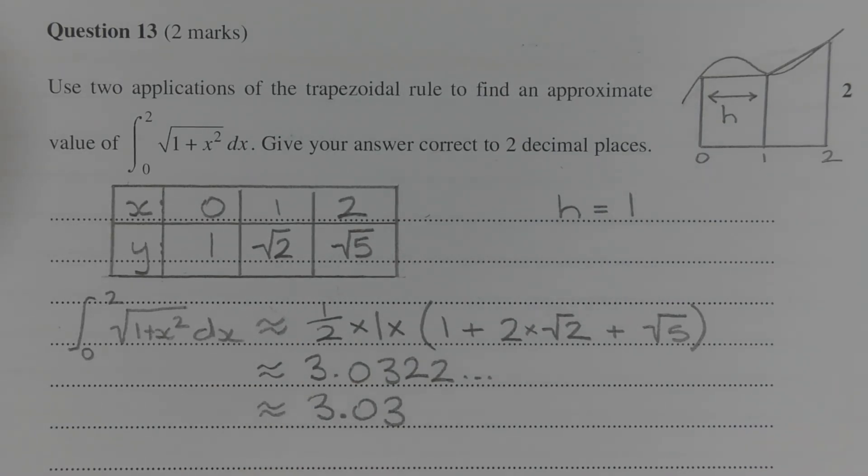Applying two applications of the trapezoidal rule, the integral from x equals 0 to x equals 2 of the square root of 1 plus x squared dx is approximately equal to half times 1 times 1 plus 2 times the square root of 2 plus the square root of 5,